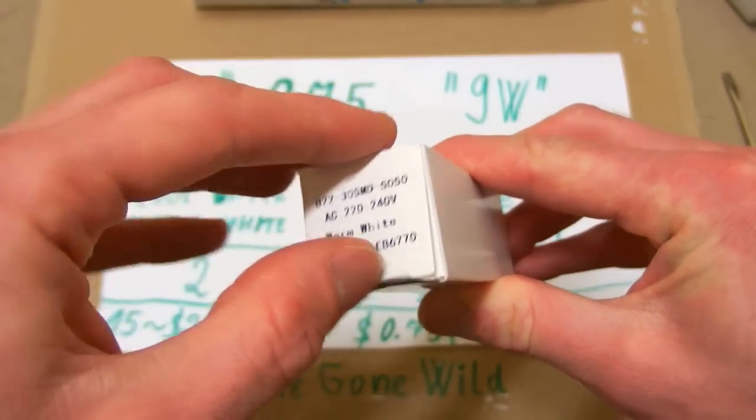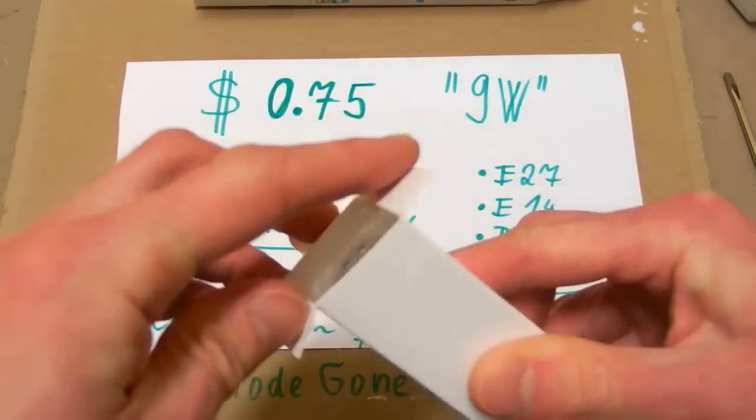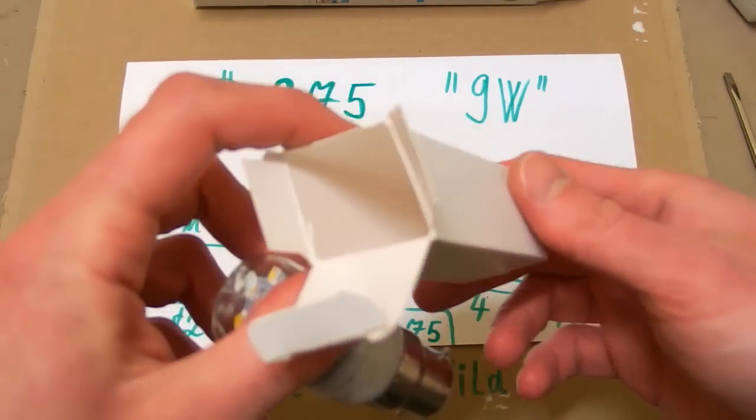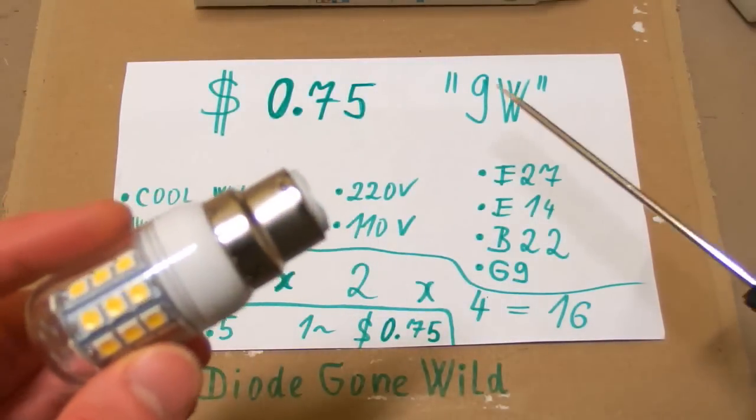So this is another interesting LED light bulb from eBay for just about 75 cents. And this one came in a nice box which wasn't even crushed by the postage. And it is called 9 watts.